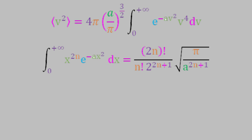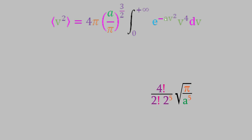This is pretty complex looking, but if we compare this integral to the one in our equation, you can see that little n must be equal to 2, and the x corresponds to v in our equation. That means the solution to the integral must be 4 factorial over 2 factorial times 2 to the fifth power times the square root of pi over a to the fifth power.